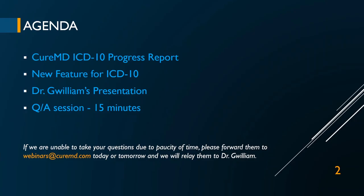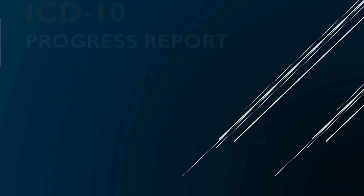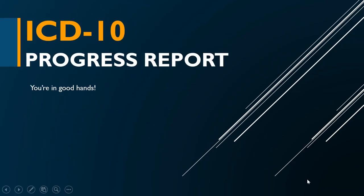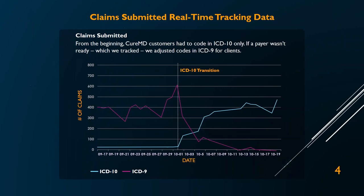Let's start with a progress report on what's been happening with CureMD, specifically with respect to ICD-10. This happened about a year ago on October 1st, 2015. We were looking at how claim submissions changed and how ICD-10 usage changed over that period. We started seeing a tremendous drop in claims being submitted using ICD-9 codes. For about two weeks, we continued to have some ICD-9 claims being submitted, after which everything switched over to ICD-10, as we effectively required all clients to start coding in ICD-10 as of October 1st.